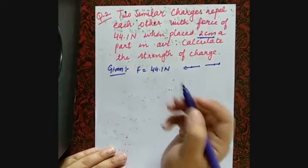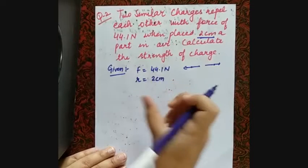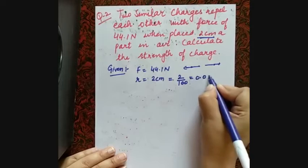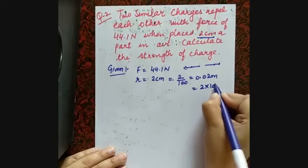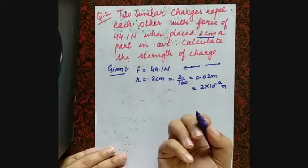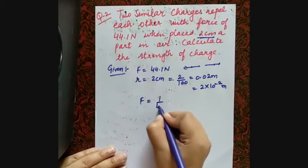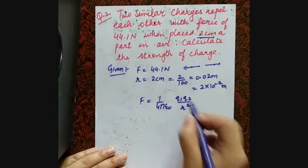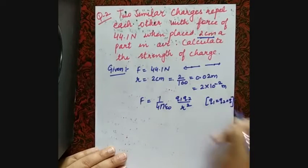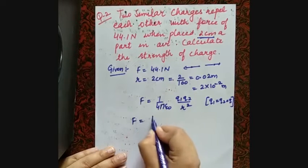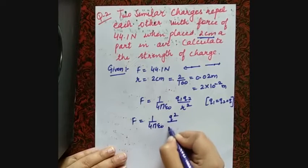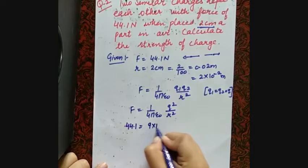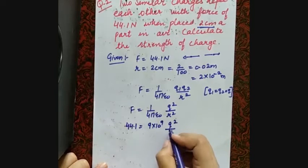So r = 2 cm = 2×10⁻² meters. Since both charges are of similar nature (equal charges), the formula becomes F = (1/4πε₀) × Q²/r². We know F = 44.1 N and r = 2×10⁻² m. We need to find Q. Rearranging: Q² = F × r² / (9×10⁹).